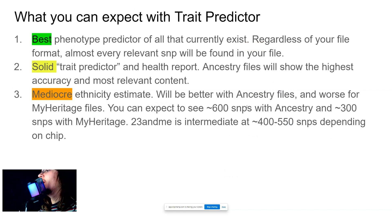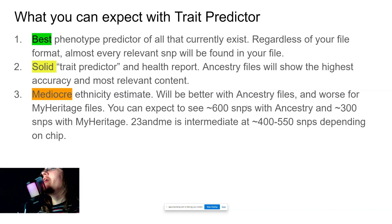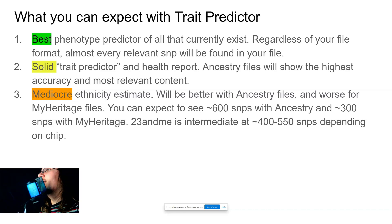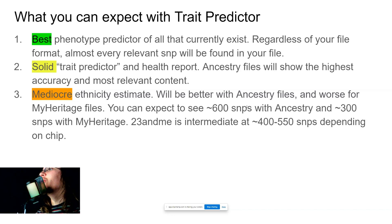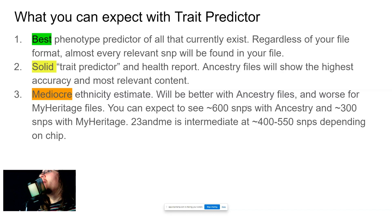23andMe files are intermediate — they're about 400 to 550 SNPs — but the ethnicity estimate is not the strong point of Trade Predictor. The ethnicity estimate is something you can get for free. You can go on GEDmatch and get yourself a very good calculator, which is Eurogenes K36. You can get your ethnicity estimate for free from GEDmatch. It was more of a coding practice for me to incorporate that into Trade Predictor rather than to actually make a dedicated ethnic calculator.